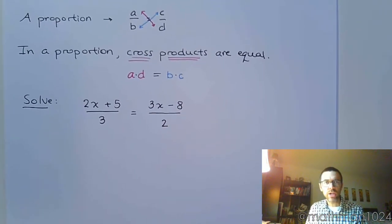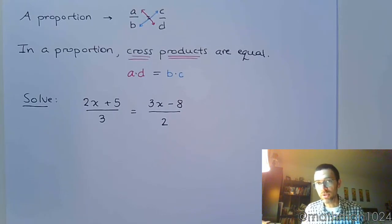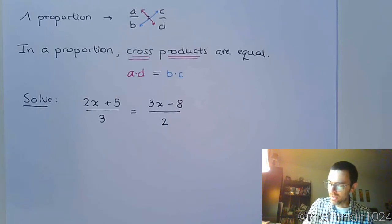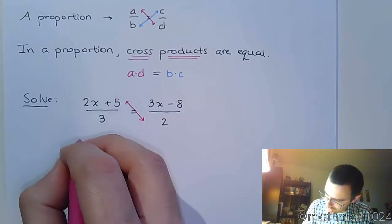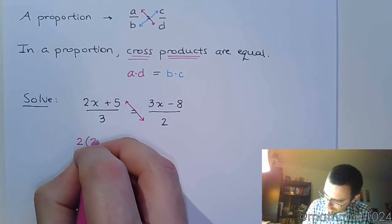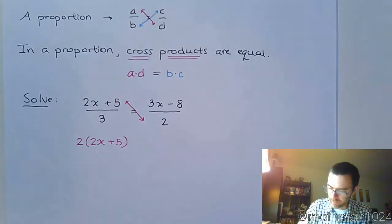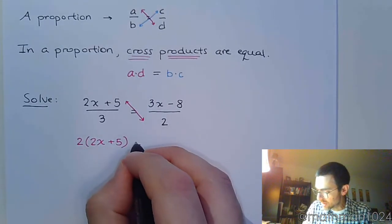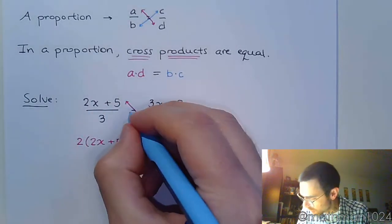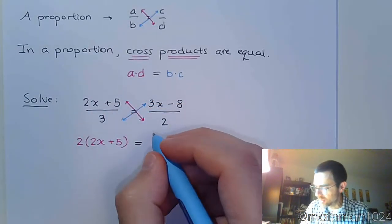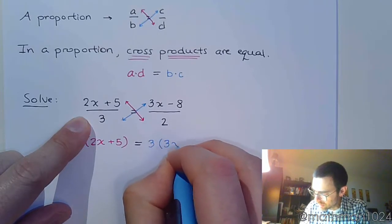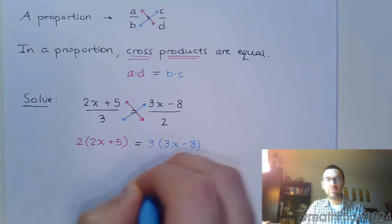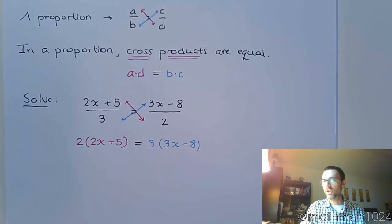So, if I take 2x plus 5 over 3 is equal to 3x minus 8 over 2. So, what we just saw at the top of this page is that we have a proportion. And with a proportion, we know that the cross products are supposed to be equal. That means the product of these guys, so I'm going to write that as 2 times 2x plus 5, that product is supposed to equal the other cross product, which would contain the two factors 3 and 3x minus 8. That's what we're saying when we say the cross products are equal.